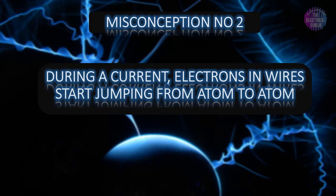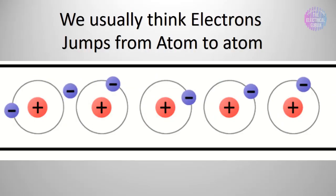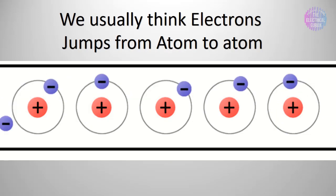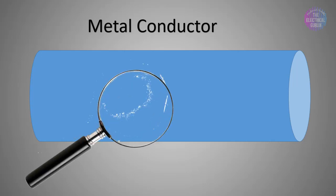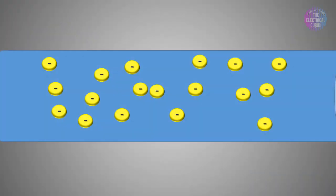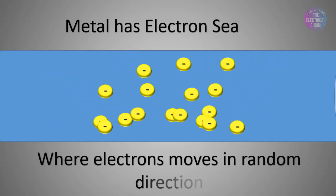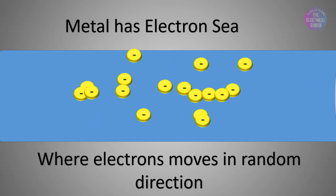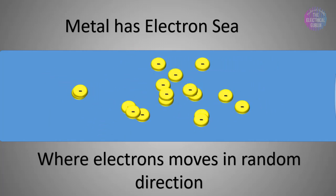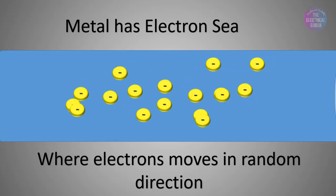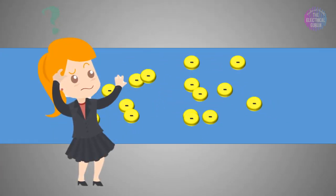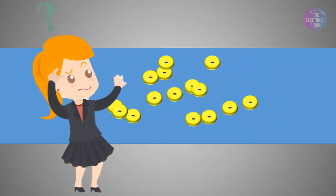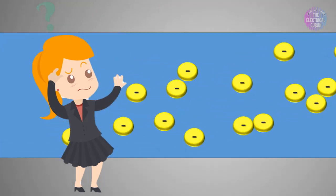Misconception number two: during current flow, electrons in a wire start jumping from atom to atom. We usually think electrons jump from atom to atom, but the actual scenario is a little different. To understand, let's zoom into a metal conductor at the atomic level. Metal has a very unique structure where electrons are loosely bounded to the nucleus, especially those in the valence shell. These are called an electron sea. In the electron sea, electrons are moving in random directions. You may then wonder why current is not produced — it's because the electrons move in such directions that they cancel each other's effect, so the net current becomes zero.